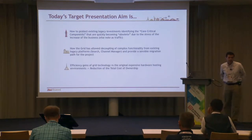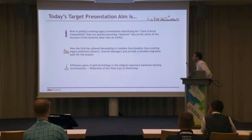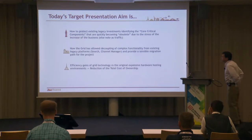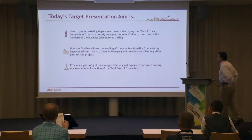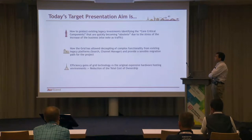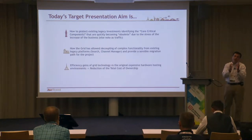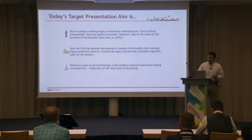The aim of today is to give you three main topics. First, how to protect existing legacy investment by identifying the core critical components that are quickly becoming obsolete due to increased business traffic. Second, how GridGain allows us to create a good migration plan, decoupling critical components of the application and saving the core. Third, a bit about efficiency and how GridGain reduces total cost of ownership for the overall project.